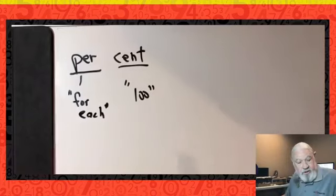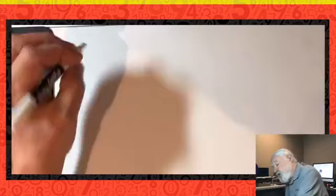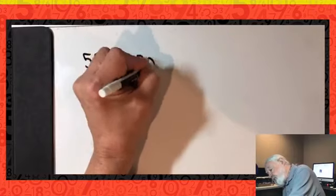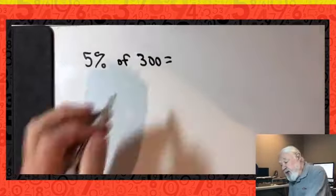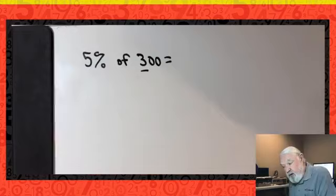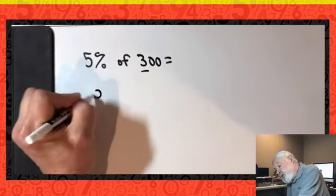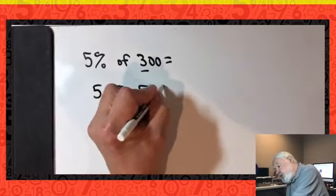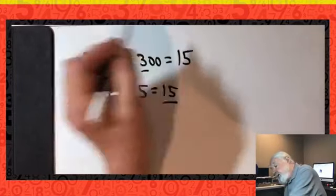So now that we know what percent means, let's use that knowledge to help us do some problems. So the first problem I'd like to do, let's do five percent of 300. Now we just said that percent means for each hundred. So the first thing we need to do is determine how many hundreds we have. And when we look at 300, we can see pretty clearly that there are three hundreds in 300. So percent means for each hundred. So we're going to count five for the first hundred, five for the second hundred, and five for the third hundred, making a grand total of 15. So 5% of 300 is 15.